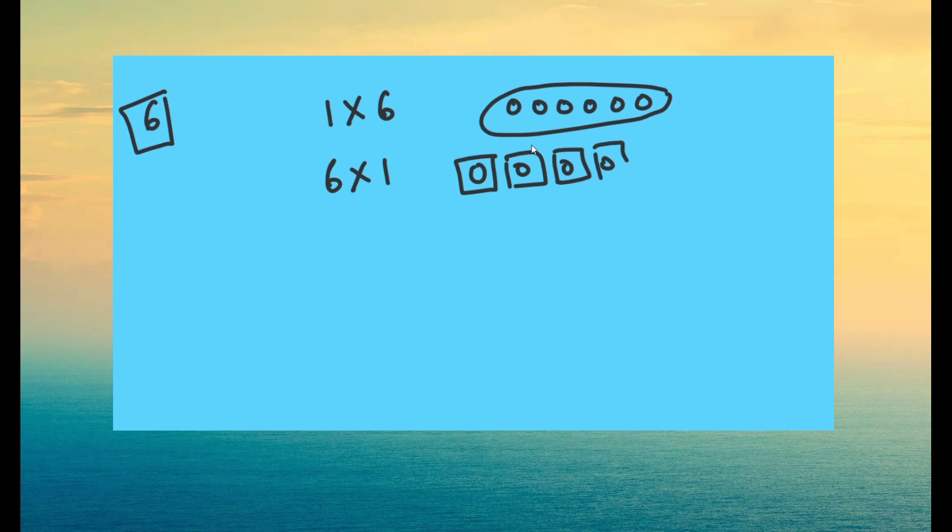We need to write six as a product of two numbers. So first is one into six. This means one group of six. The next way is six times one or six into one. This means six groups of one. So here are our six groups of one.